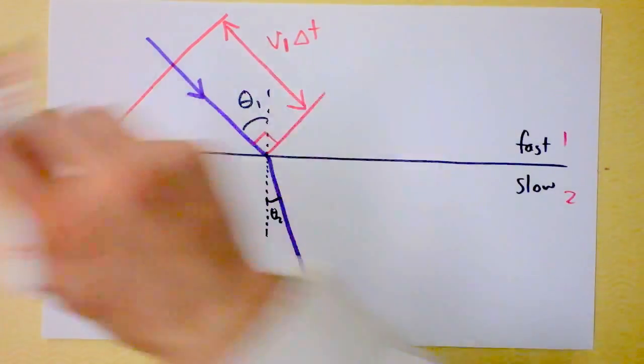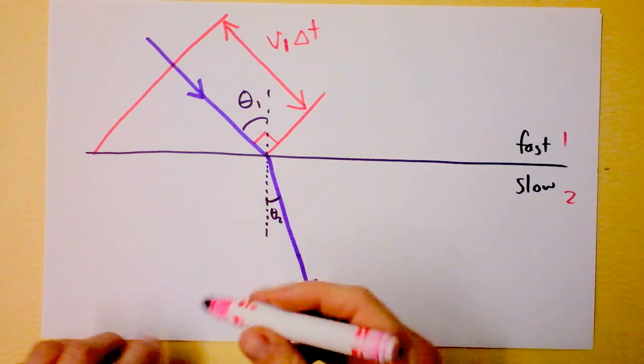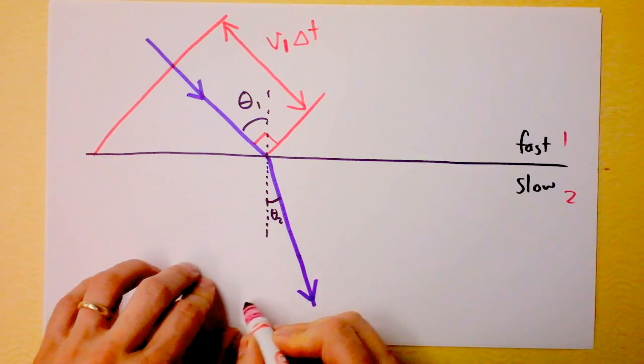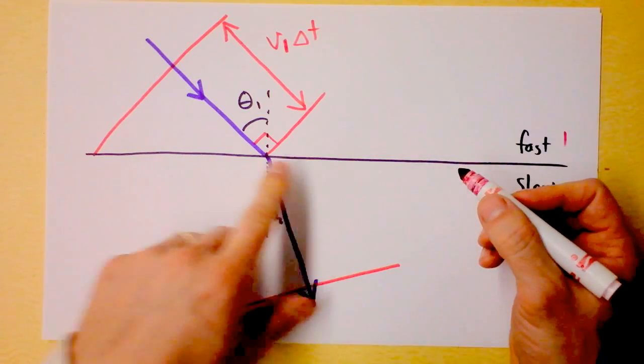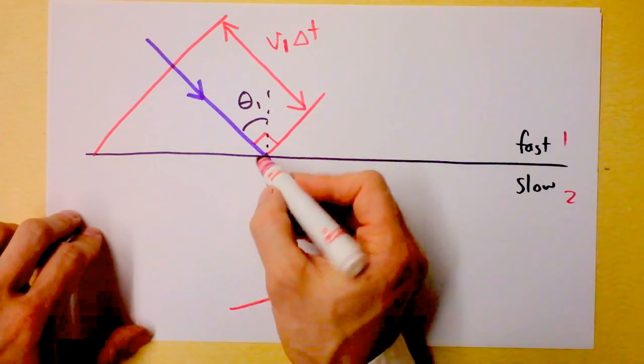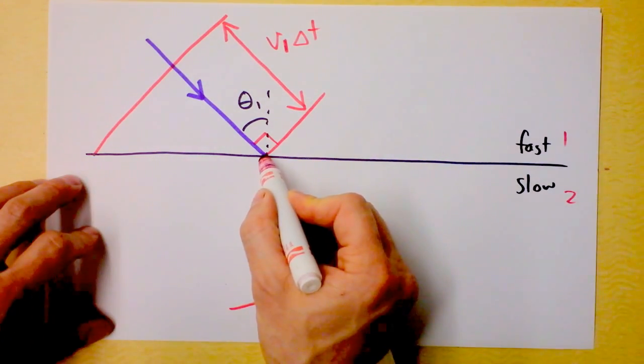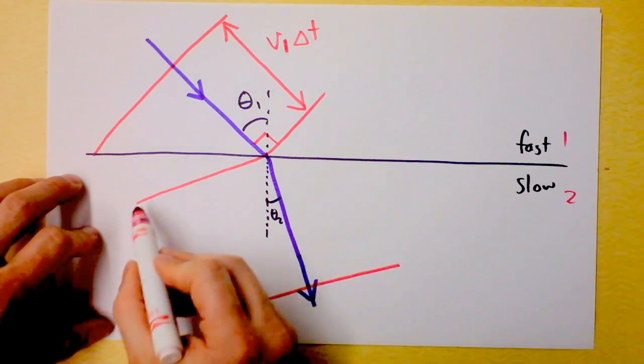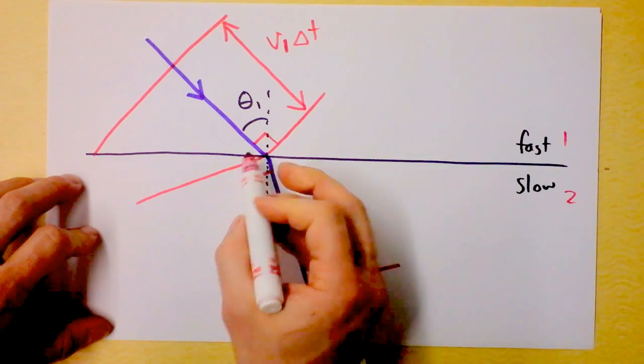But the frustrating thing is that the guys in this slow region, you can think of it as a swamp or whatever you want to do, have not been able to go nearly as far. And so, we say that their normal looks something like this, because they bent this direction. And I'm interested in how far they went during the same amount of time. It looks like they only went this far, you see that? This line has to be parallel to that line, it has to be normal to that line right there.